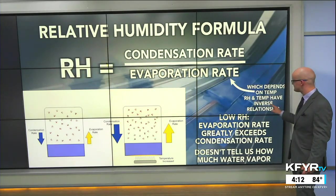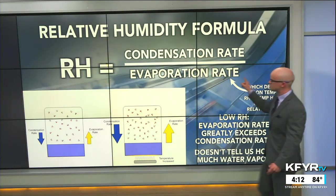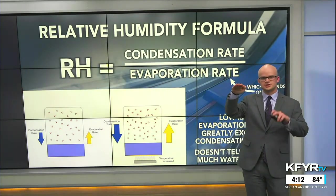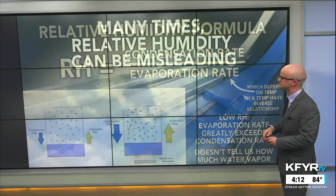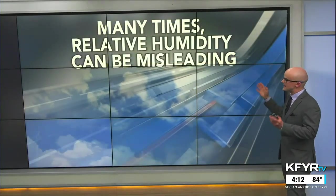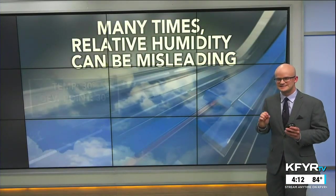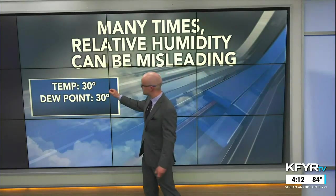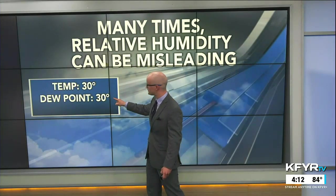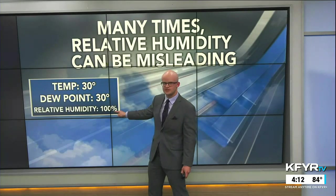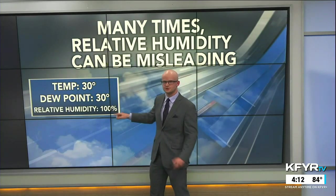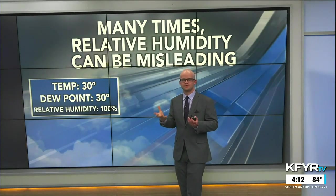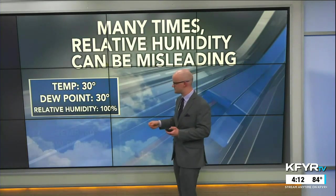Relative humidity and temperature have an inverse relationship — when temperature increases, relative humidity decreases. Many times relative humidity can be misleading. For example, with an air temperature of 30 degrees and a dew point of 30 degrees, the relative humidity is 100 percent — the atmosphere is saturated, and fog or precipitation is relatively likely.